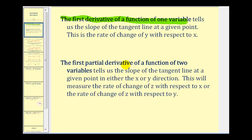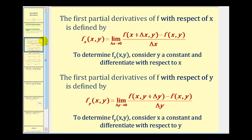The first partial derivative of a function of two variables tells us the slope of the tangent line at a given point in either the x direction or y direction. Therefore, the partial derivative measures the rate of change of z with respect to x or the rate of change of z with respect to y. Here we see the limit definitions of the partial derivatives with respect to x and with respect to y.